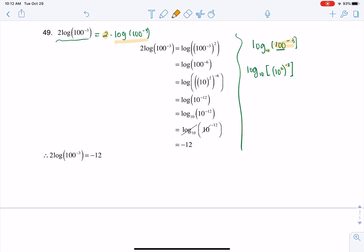Now when you have a power raised to a power, you're going to multiply exponents. So I'm looking at log base 10, and then I have 10, well, 2 times negative 3 is negative 6.